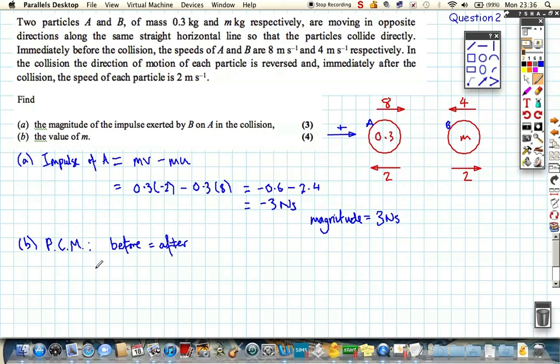So the total momentum before, remembering our positive, is mass times velocity. So it's 0.3 times 8 minus, because it's acting in the opposite direction, 4M. It's got to equal the total momentum afterwards, which is mass times velocity, acting to the left, plus 2M.